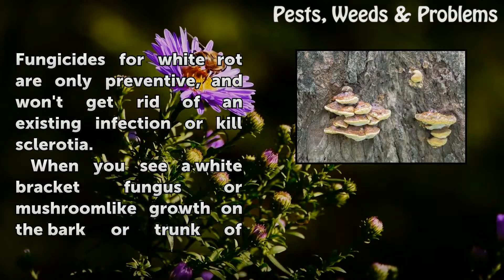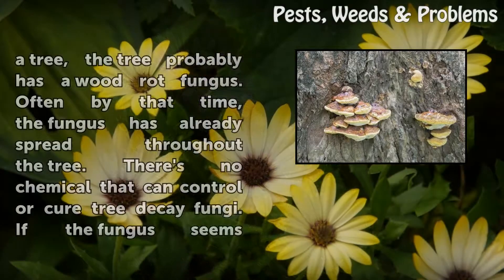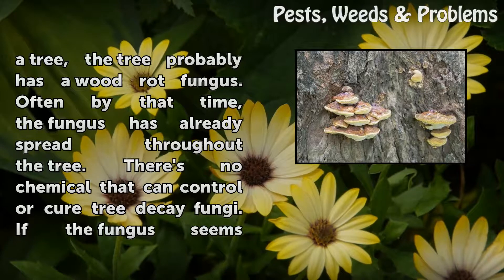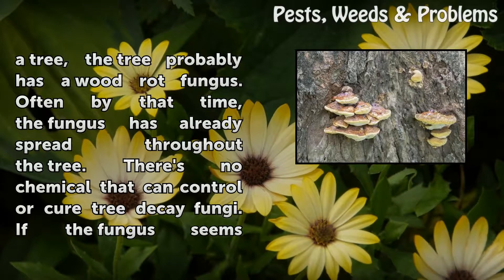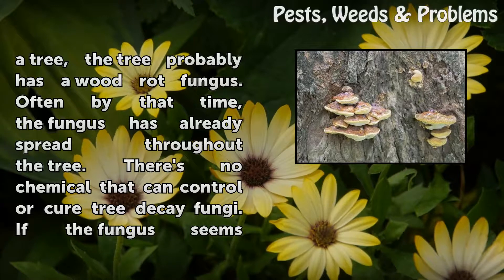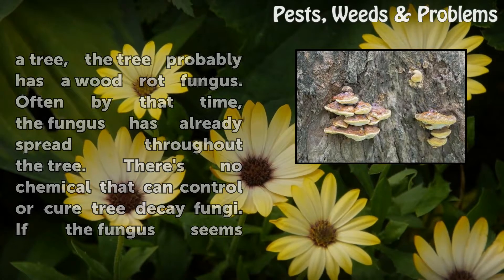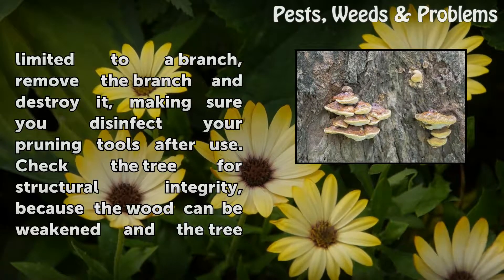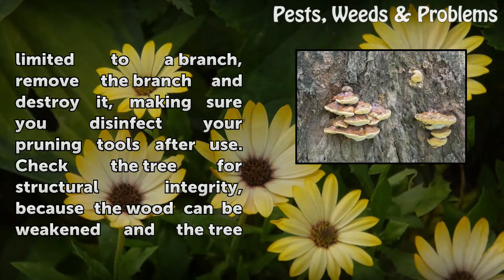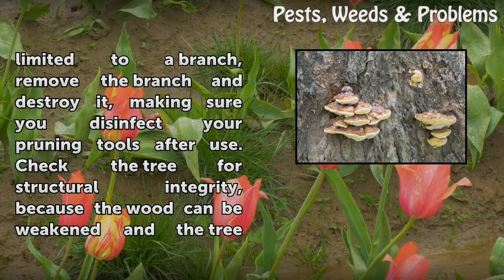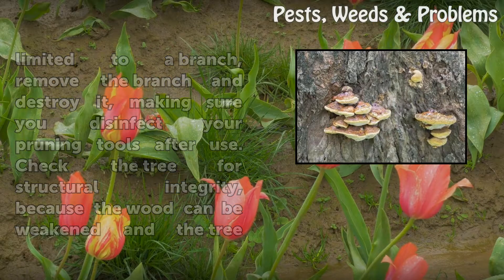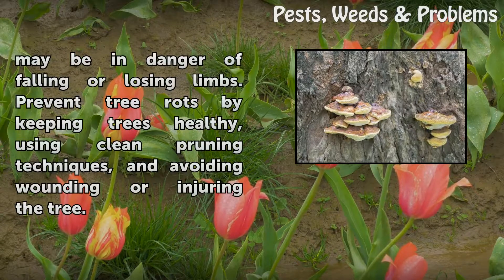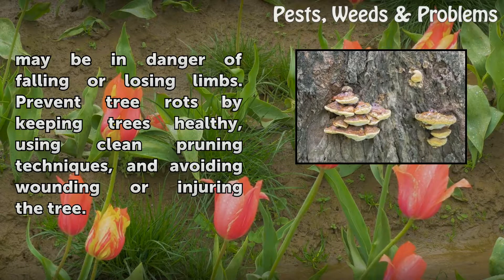When you see a white-bracket fungus or mushroom-like growth on the bark or trunk of a tree, the tree probably has a wood rot fungus. Often by that time the fungus has already spread throughout the tree. There's no chemical that can control or cure tree decay fungi. If the fungus seems limited to a branch, remove the branch and destroy it, making sure you disinfect your pruning tools after use. Check the tree for structural integrity, because the wood can be weakened and the tree may be in danger of falling or losing limbs. Prevent tree rots by keeping trees healthy, using clean pruning techniques, and avoiding wounding or injuring the tree.